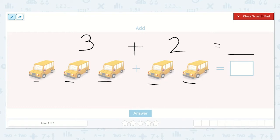And we can find the answer by counting all of the buses. 1, 2, 3, 4, 5. There are 5 buses. So our answer is 5.